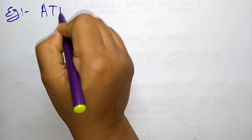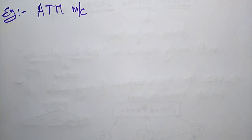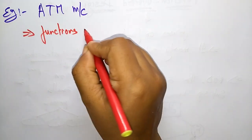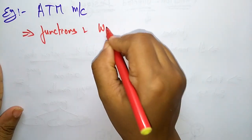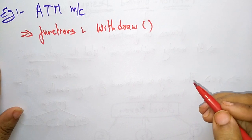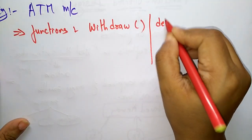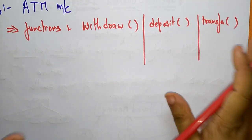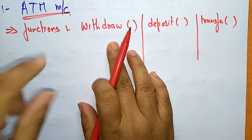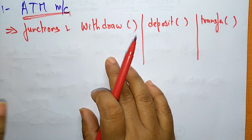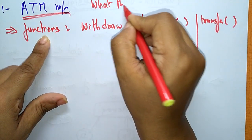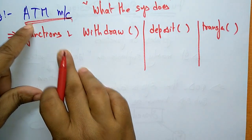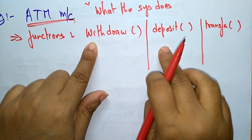Let us take the ATM machine. The functions present in an ATM machine — if you go to an ATM machine, what will you do? You will withdraw money. So withdraw is one function, or you can deposit, or you can transfer. These are the functions that you can perform in an ATM machine. The function emphasizes on what the system does — the operations of withdraw, deposit, and transfer.